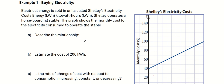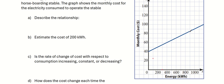Let's do example one. This first example is about an electric company. Electrical energy is sold in units called kilowatts per hour. Shelly operates a horse boarding stable. The graph shows the monthly cost for the electricity to operate the stable. As you can see here, it's a straight line, so you would say that this relationship here is linear.